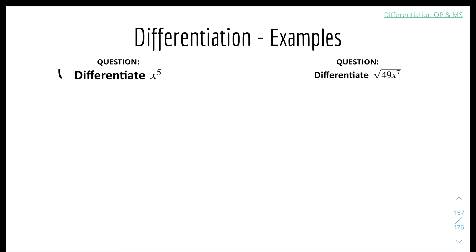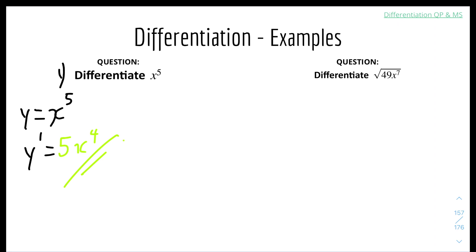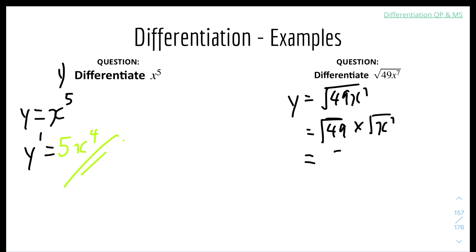Example 1: differentiate x to the power of 5. Let y equals x to the power of 5. Pull the power down to get 5x, then reduce the power by 1 to get 5x to the power of 4. Example 2: differentiate the square root of 49x to the power of 7. Simplify: root 49 equals 7, and root of x to the 7 is x to the 7 over 2. So y equals 7 times x to the 7 over 2. Differentiating gives 7 times 7 over 2, which is 49 over 2, times x to the power of 5 over 2.